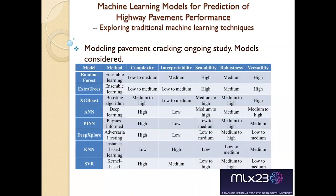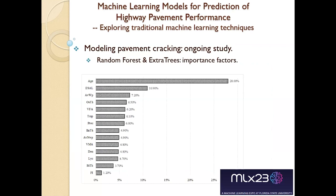We initially looked at several ML models, and you can see their pros and cons in terms of complexity, scalability, and versatility. From random forest and extra trees, age was considered the most important factor, followed by ESA — how much truck traffic has used the segment since construction — and then air voids, temperature during construction, and number of layers. Those are the factors that contributed most.